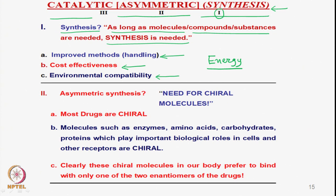The second thing is that synthesis should be asymmetric — we need the molecules as chiral molecules. If there is no chirality in the molecule, we need not worry. But many important molecules, especially drugs, are chiral. Therefore, it is very important that we focus on asymmetric synthesis, that is, the synthesis leading to chiral, optically pure molecules.